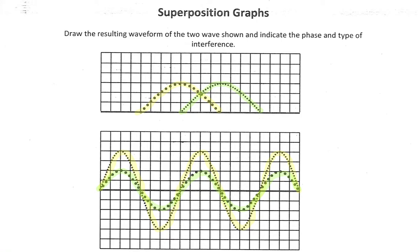We're going to talk about superposition. So far we know a little bit about the anatomy of waves. We've learned a few different formulas for frequency, for period, as well as the actual wave formula, which was V equals lambda F. Hopefully you've had some chance to practice with some of that.